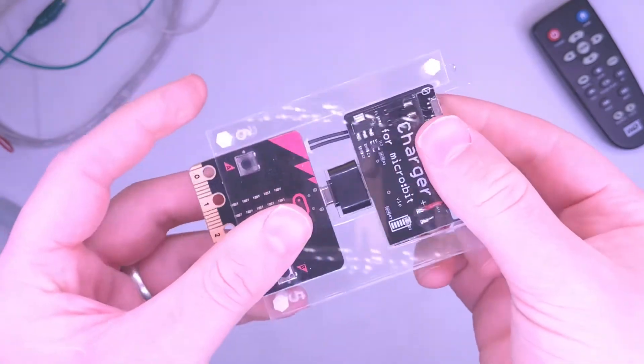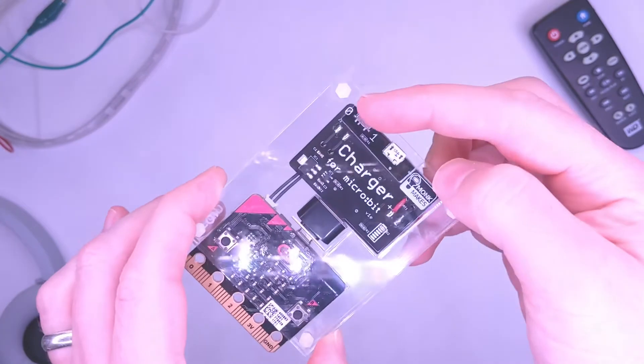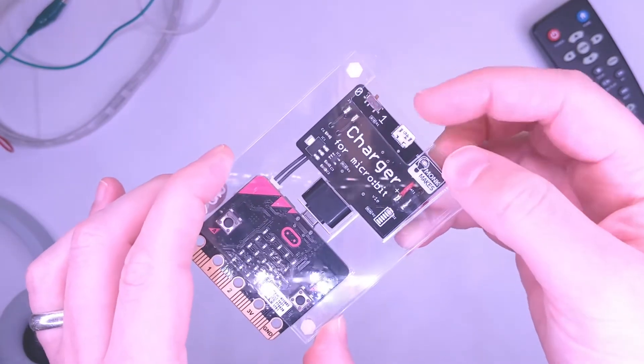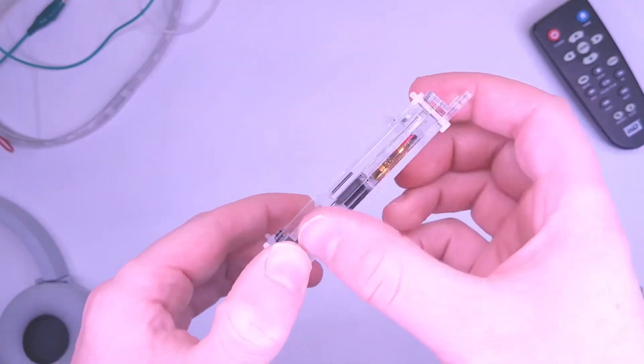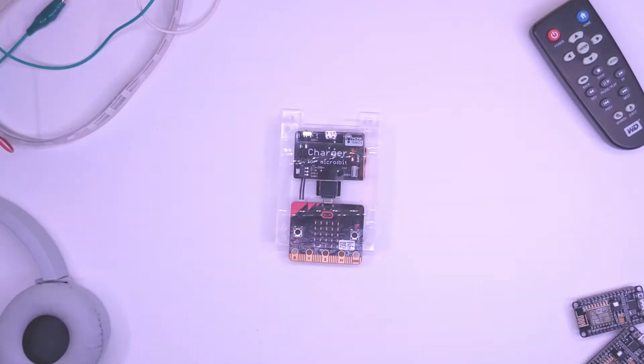Once you've finished putting together the enclosure, you can see that it's a pretty good job and you've still got access to the on-off switch on the charger. You've still got access to the port for the USB, and at the bottom there you can see that you've got access to the pins so you can still add accessories.